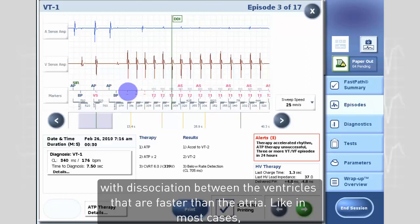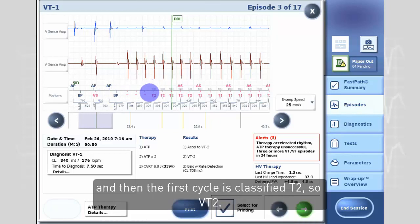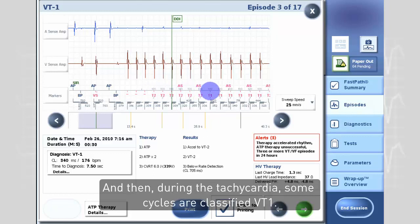Like in most cases, the first cycles are unbinned because there is a discordance between the current interval and the average value. Then the first cycle is classified T2, so VT2, and then during the tachycardia some cycles are classified VT1.